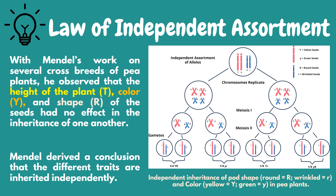The third law is the law of independent assortment. The principle of independent assortment describes how different genes independently separate from one another when reproductive cells develop. Independent assortment of genes and their corresponding traits was first observed by Gregor Mendel in 1865 during his studies of genetics in pea plants. With his work on several crossbreeds of pea plants, Mendel observed that the height of the plant, color, and shape of the seed had no effect on the inheritance of one another. Mendel derived a conclusion that different traits are inherited independently.